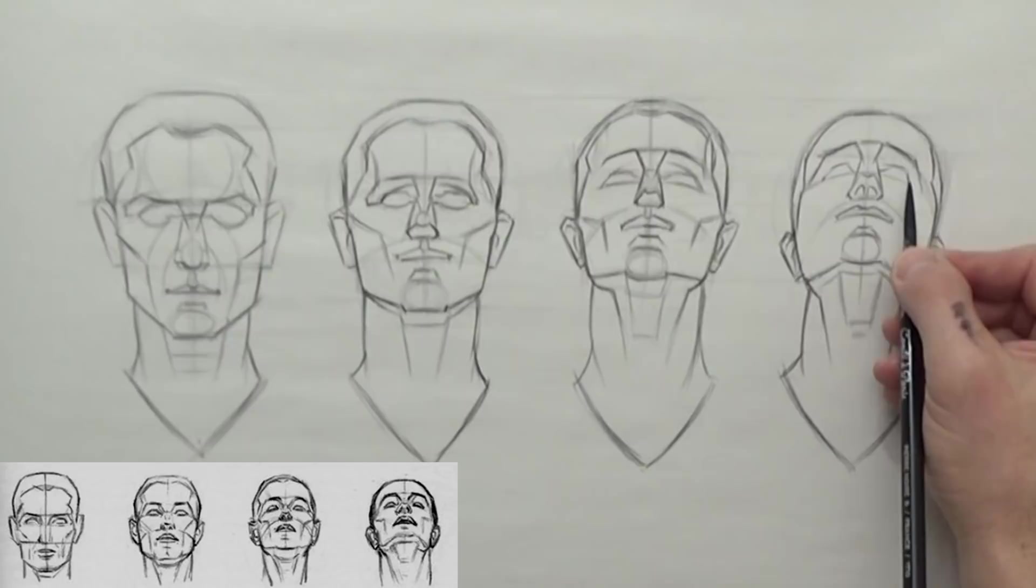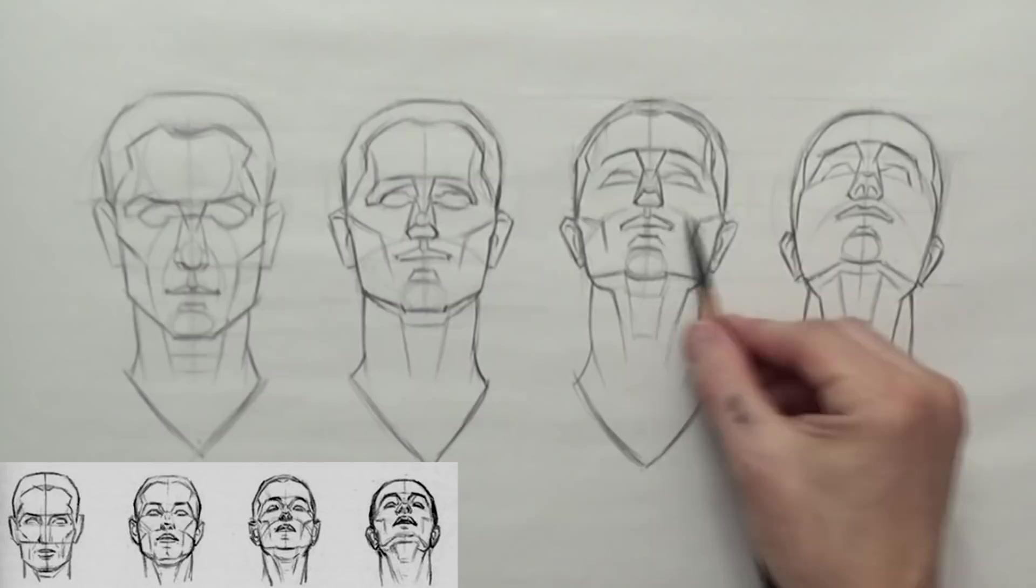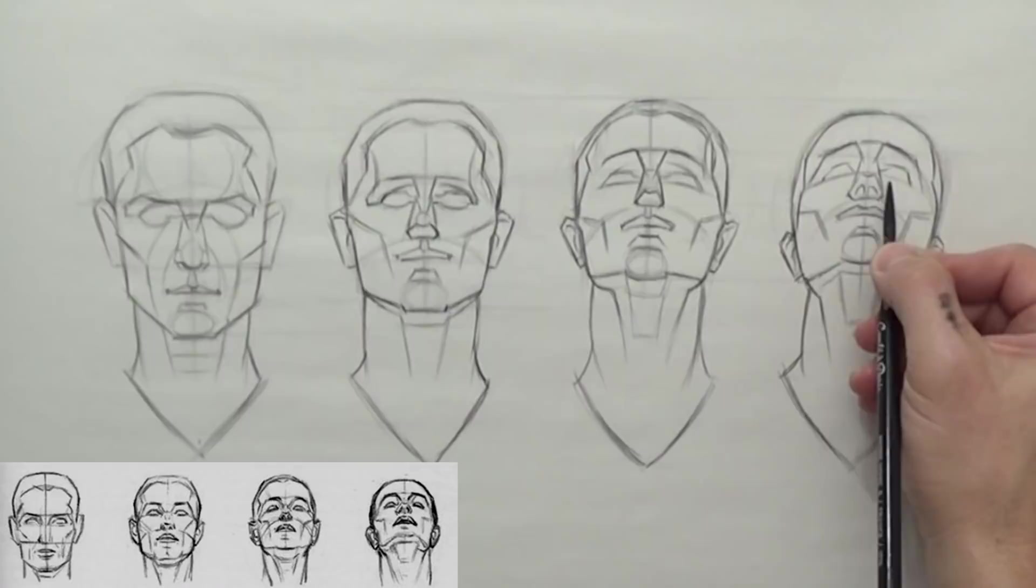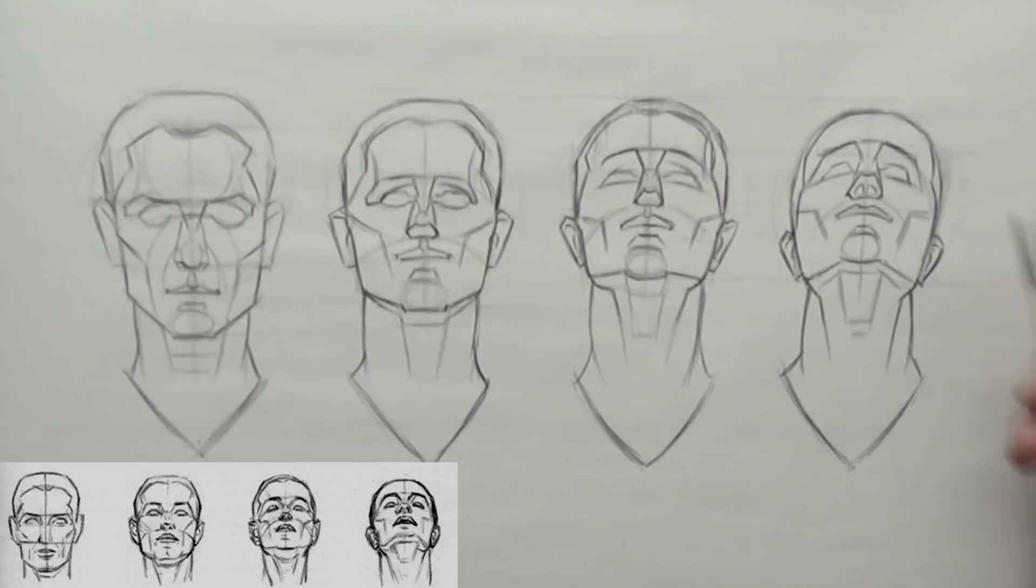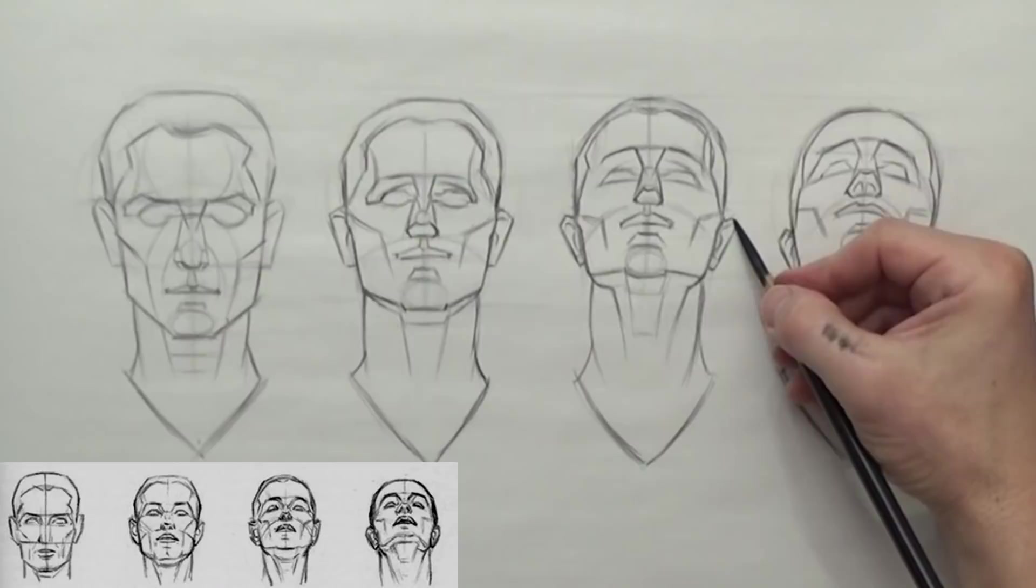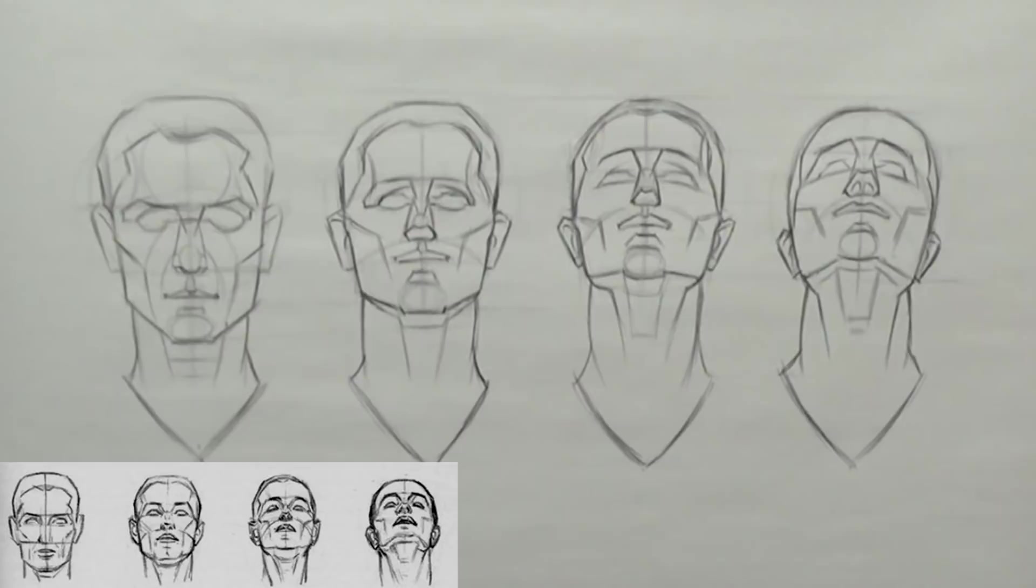So now he's really looking up, and we can see under the nose really well. The cheekbone is pretty straight. That's pretty much this line on plate seven, the second line. Man, that was really hard. That stretched my brain pretty good. Take a deep breath. I'm going to take a break after this, that's for sure.